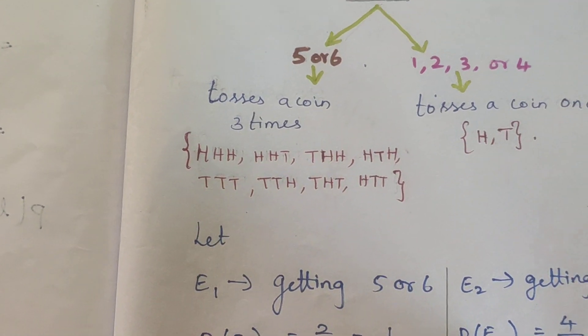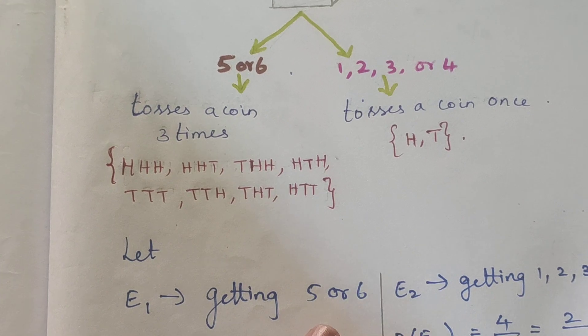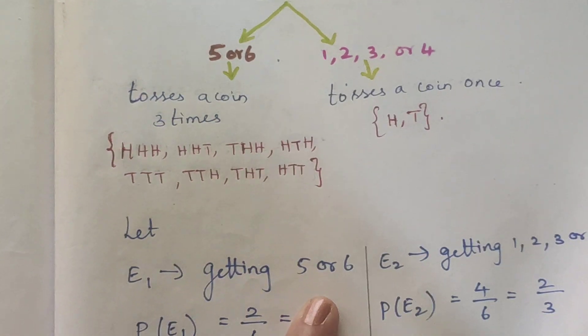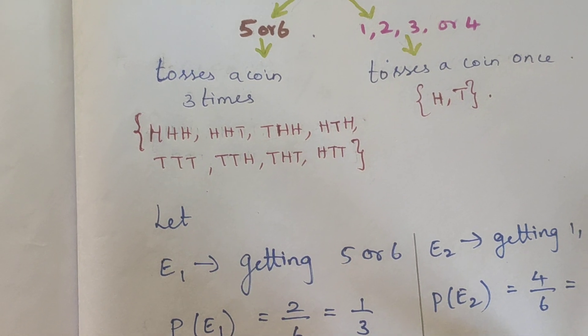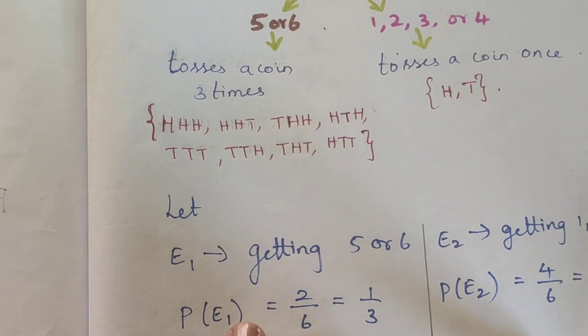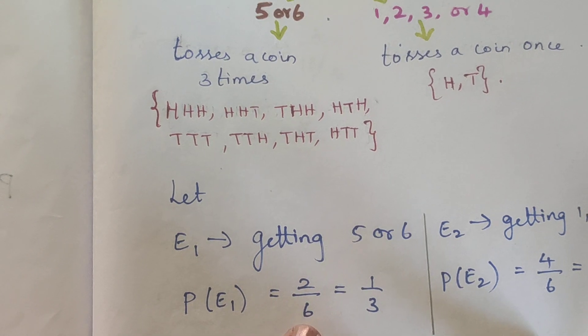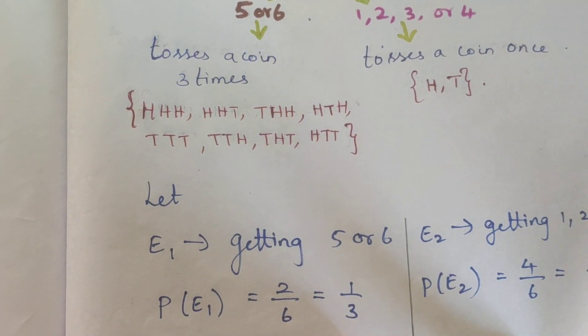Let's define E1 as getting 5 or 6 on the die. If we get 5 or 6, there are 2 chances out of 6 total. So probability of E1 is 2 by 6, which reduces to 1 by 3.